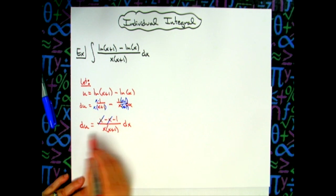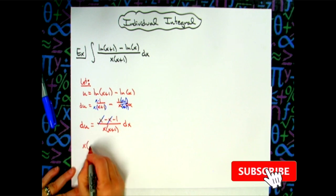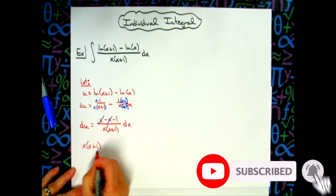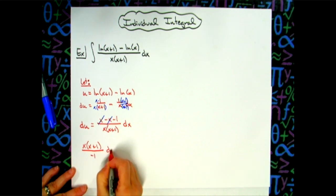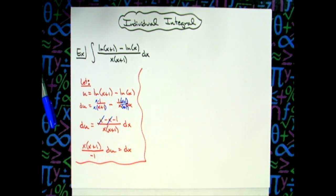If I go ahead and solve this all the way down for dx, I'm then going to have an x times x plus 1. And then we'll go ahead and do the reciprocal there over 1 du is equal to dx. So long explanation there on that du, but showing all that work to simplify that.